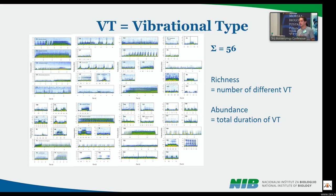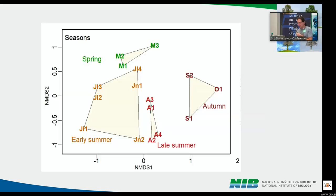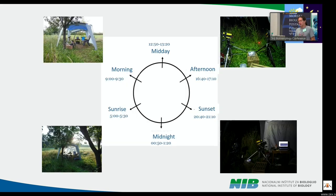From this data we derived richness — the number of different vibrational types — and abundance, the total duration. We then ran NMDS on the community metrics of these vibrational types across each recording session over the year, and we could clearly distinguish four different groups of vibroscape: spring, early summer, late summer, and autumn. Things obviously change quite a lot across seasons.